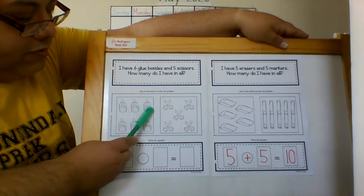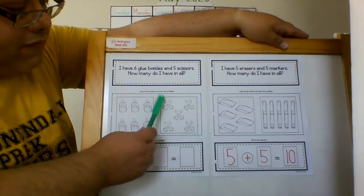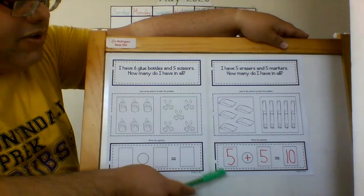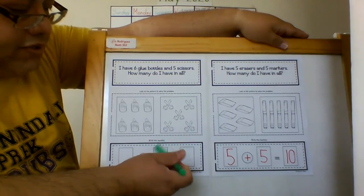So now it says look at the picture to solve the problem. Well I have one, two, three, four, five, six bottles of glue and I have one, two, three, four, five scissors. So now I need to write the equation.